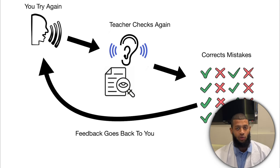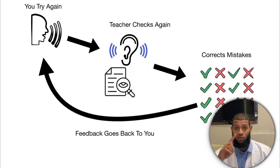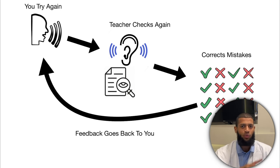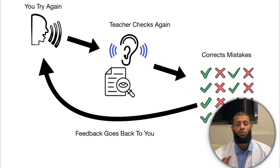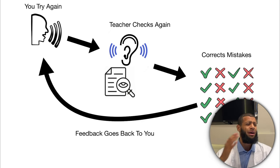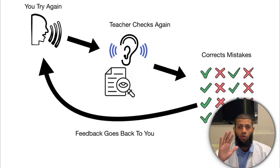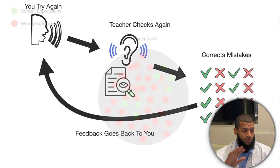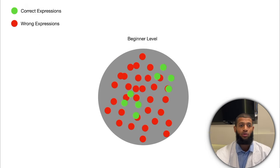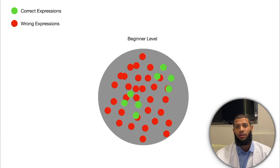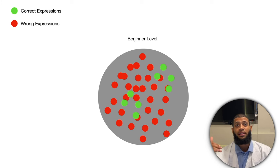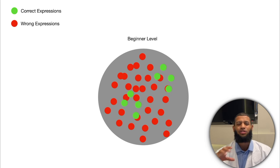You repeat the cycle again — you try again, teacher checks again, corrects more mistakes, feedback gets back to you, and you keep doing this. You don't need to overcomplicate things with this book, that book, this teacher, that method. At your beginner level you're going to have a lot of wrong expressions, so you're basically going to sound like a baby speaking — slow, stuck on every word, not fluent.